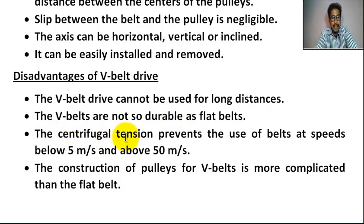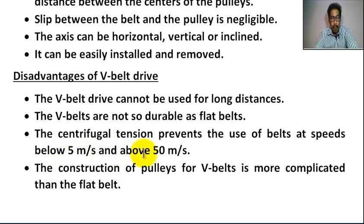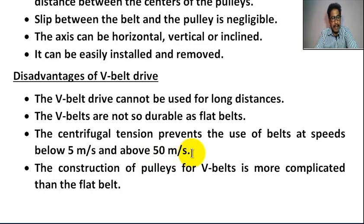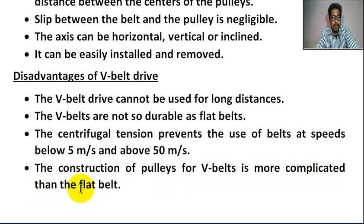The centrifugal tension prevents the use of V-belt at speeds below 5 meters per second and above 50 meters per second. The construction of pulleys for V-belts is more complicated than for flat belts.